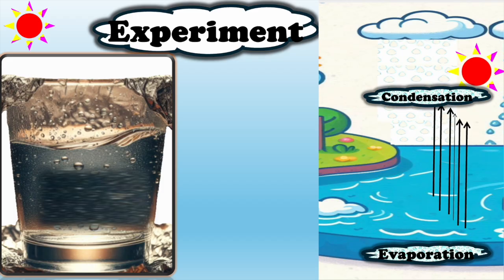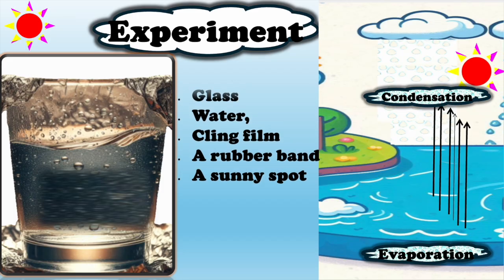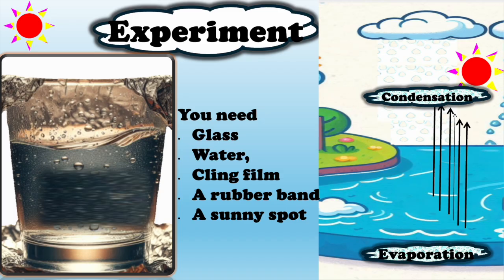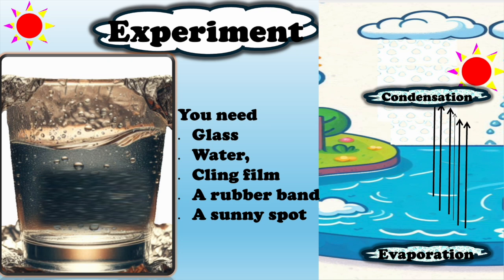Here are some experiments you can perform at home to see how the water cycle works. To see evaporation, you need a small glass, water, cling film, a rubber band, and a sunny spot. Pour water into the glass — which represents a river or ocean. Cover it with cling film, which represents the sky. Leave it under sunlight and you can observe small water droplets forming on the cling film — that shows evaporation and condensation.